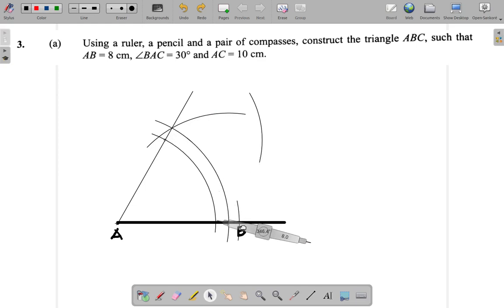Then compass point here on the same arc, and I swing another arc to make an intersection. Then between this point at A through this intersection, I bisected the 60 degrees to make a 30 degree right along here. So C will appear somewhere along this line.